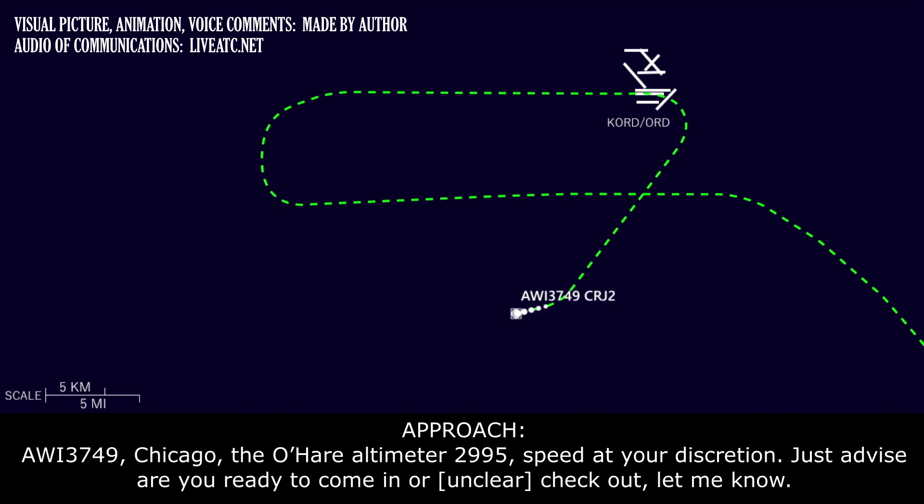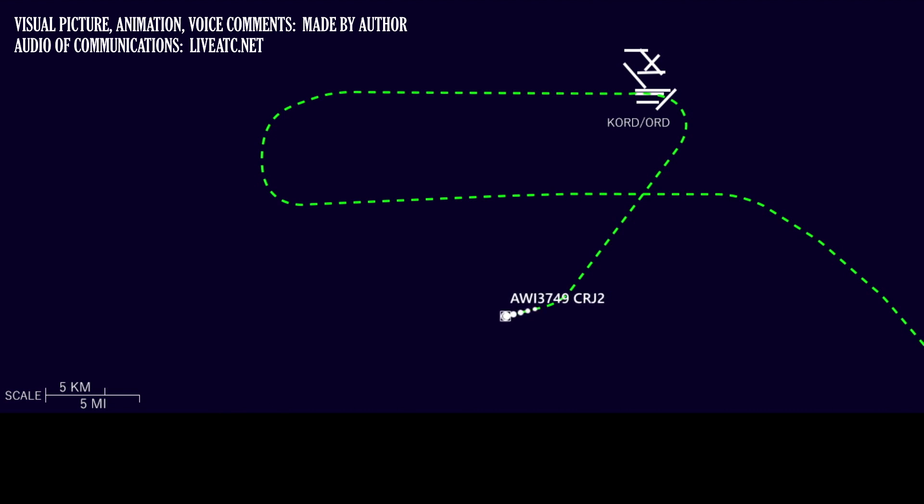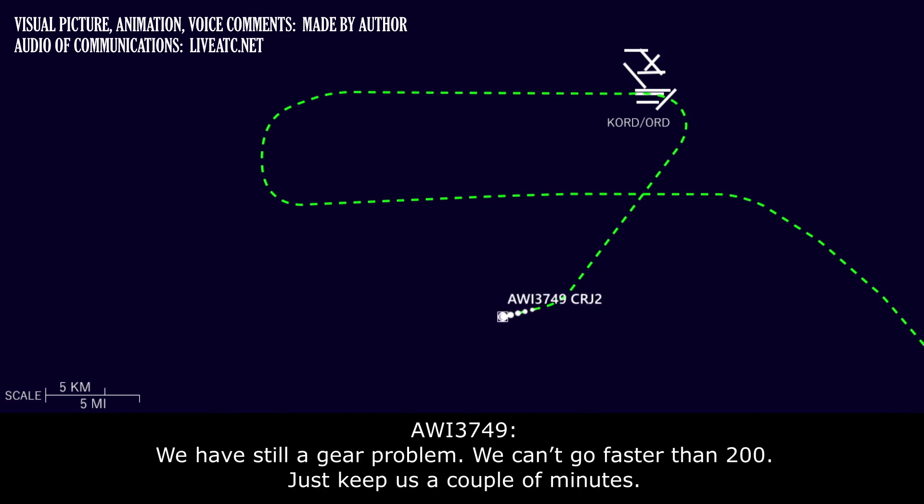Wisconsin 3749, Chicago, altimeter is 29.95, speed is your discretion. Just advise, you guys ready to come in or if you have any other checks you got to work out. We have a steel gear problem, we cannot go faster than 200 knots. Just give us a couple of minutes. Roger, sounds good.